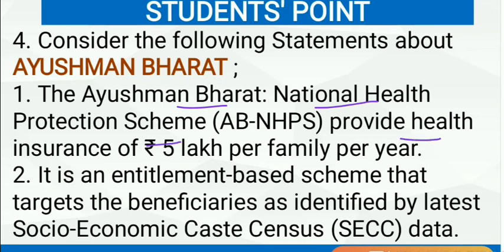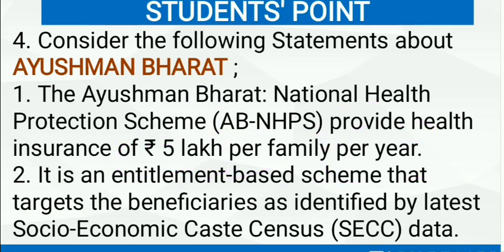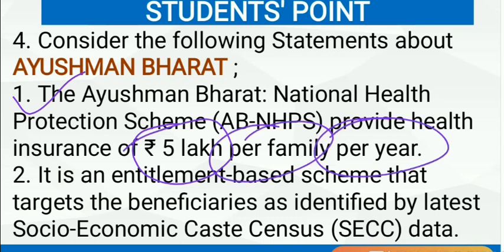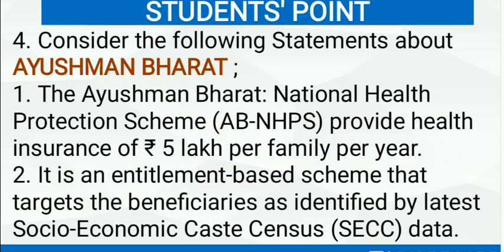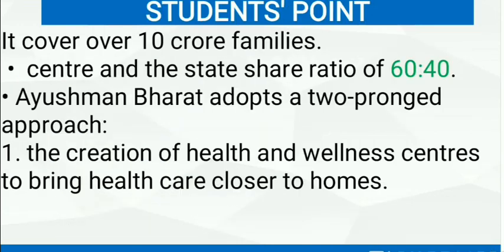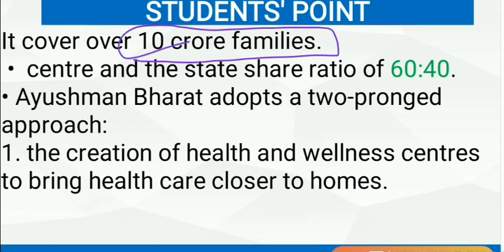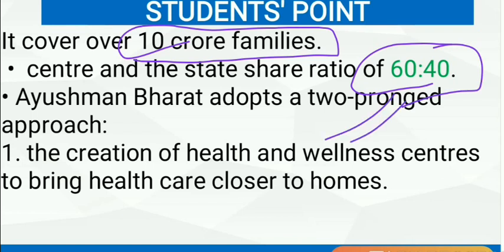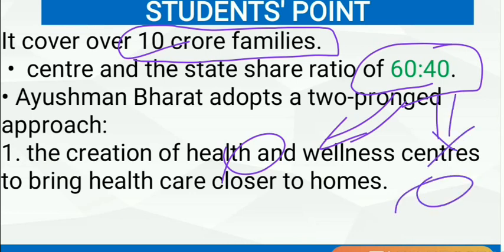Next question: consider the following statements about Ayushman Bharat. The Ayushman Bharat National Health Protection Scheme provides health insurance of Rs. 5 lakh per family per year — this statement is correct. It is an entitlement-based scheme and targets beneficiaries as identified by the latest Socioeconomic Caste Census data — also correct. So C is the right answer. The scheme covers 10 crore families and the centre-state cost sharing ratio is 60:40.